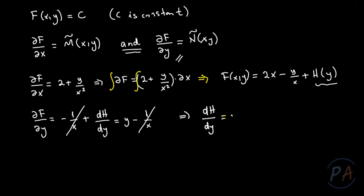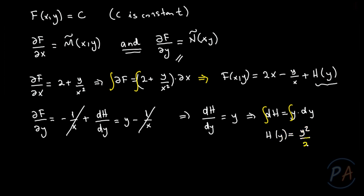The -1/x terms cancel from both sides, leaving dh/dy = y. This can be written as dh = y dy. Integrating both sides, h(y) = y²/2 + C1, where C1 is a constant of integration.